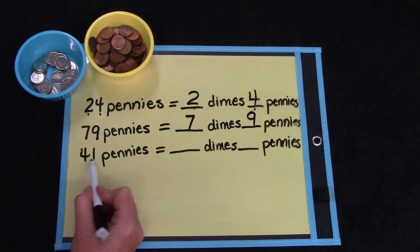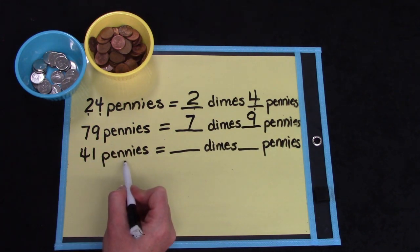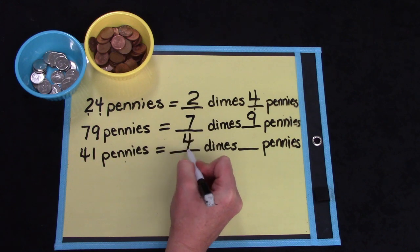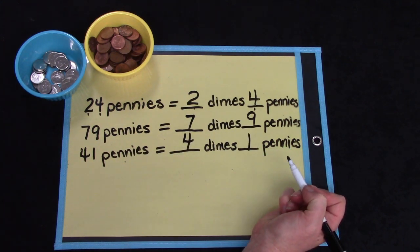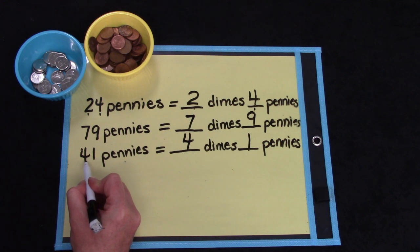What about 41 pennies? You're so smart. It is four dimes and one penny. Four dimes because the four is in the tens place, and that tells us how many groups of ten or how many dimes.